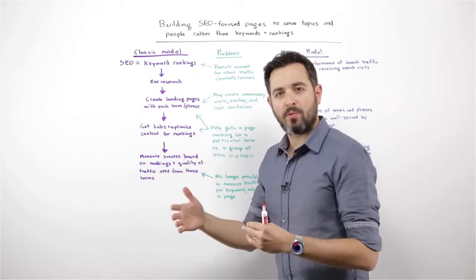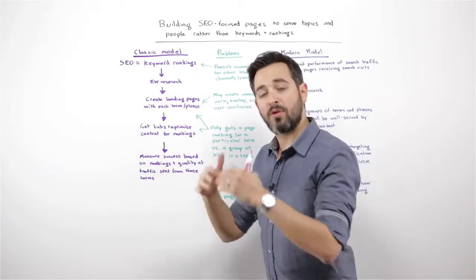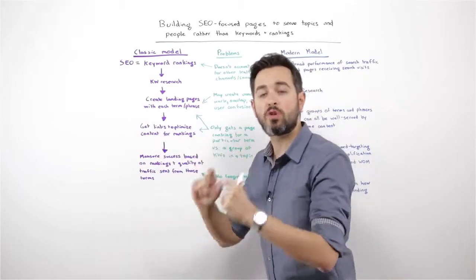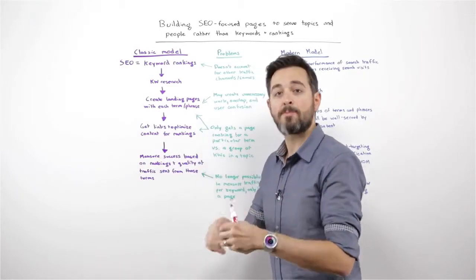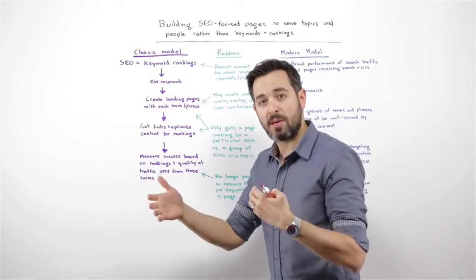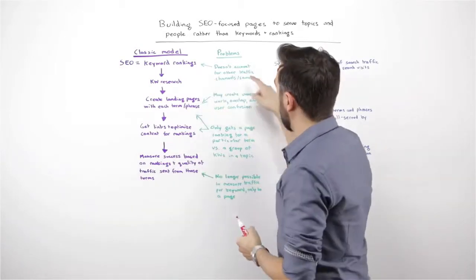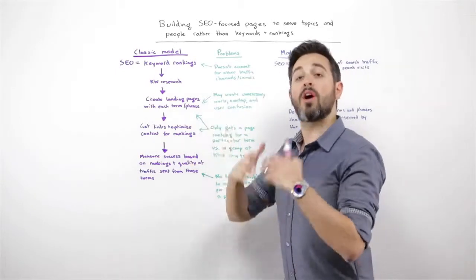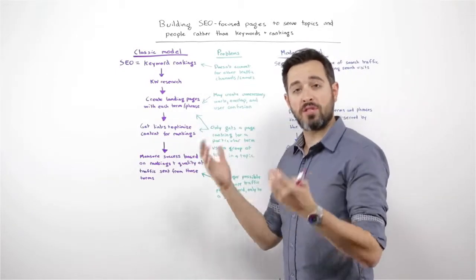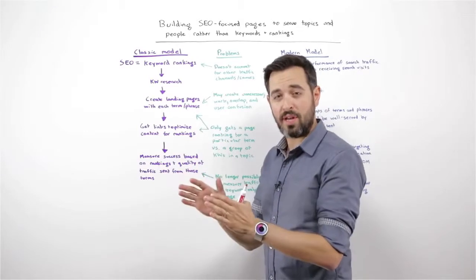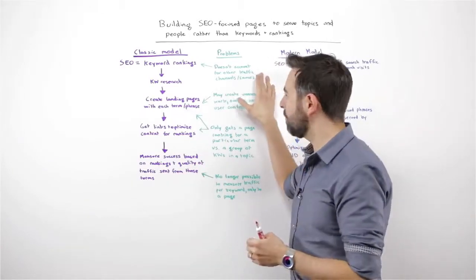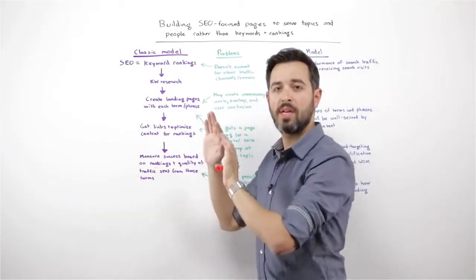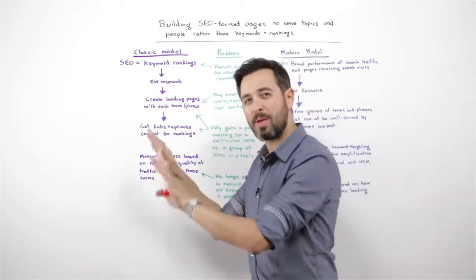Historically, SEO has really been about keyword rankings. I want to rank well for this keyword because that particular keyword sends me traffic that is of high quality. The value of the people visiting my site from that is high. The problem is this doesn't account for other types of traffic channels and sources — we're just focused on SEO — and this can be a little bit problematic because it can mean that we ignore things like social, content marketing, and email marketing opportunities.